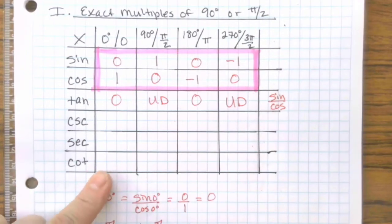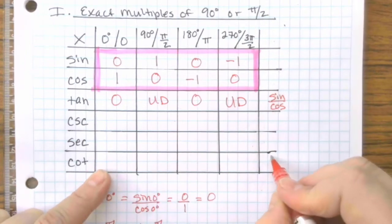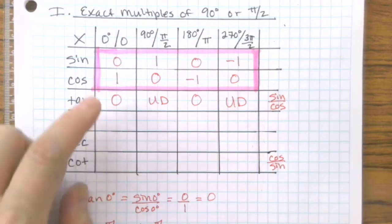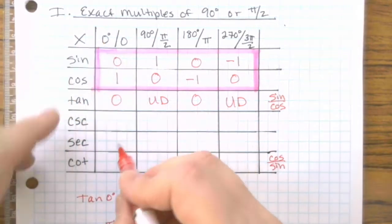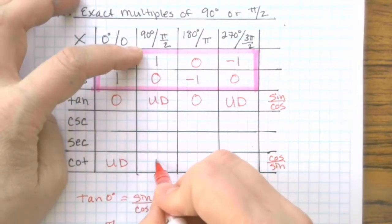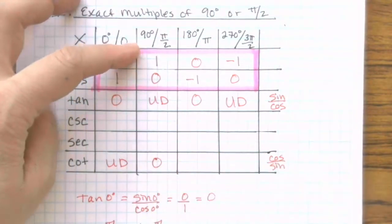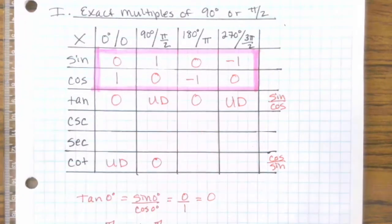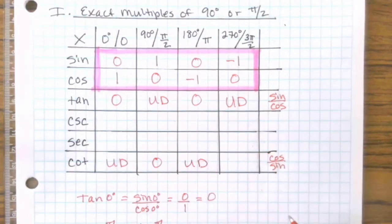Now for cotangent, cotangent is cosine over sine. So you're going to flip your results. So 1 over 0 is undefined, 0 over 1 is 0, negative 1 over 0 is undefined, and 0 over negative 1 is 0. See how easy that is?